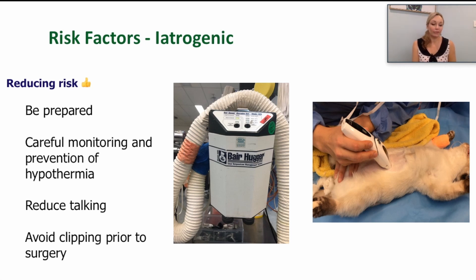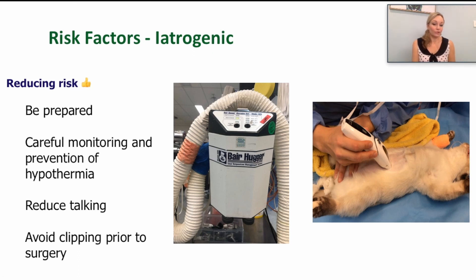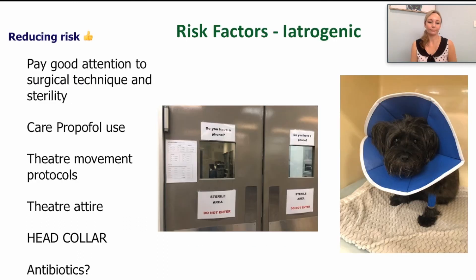Pay careful attention to hypothermia — monitor patient temperature and have a strategy to warm patients perioperatively. At VSS we use warm abdominal flush for open abdominal procedures, as well as bear huggers and heated blankets. Try to avoid clipping prior to surgery where possible, being aware that it does increase infection risk. To reduce the risk of a seroma, pay careful attention to surgical technique: adequate haemostasis, copious lavage, careful tissue apposition, closure of dead space, and use of continuous versus simple interrupted sutures.